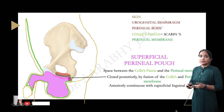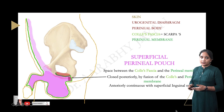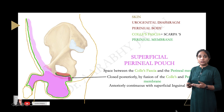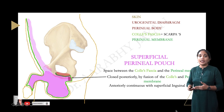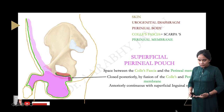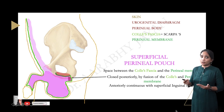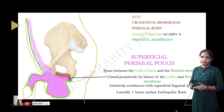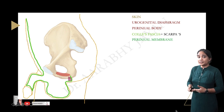Anteriorly, the superficial perineal pouch is continuous with the superficial inguinal space of the anterior abdominal wall. This is why, when there is injury to the male urethra, urinary extravasation is collected into the anterior abdominal wall. Laterally, the limiting boundary is the ischiopubic rami.